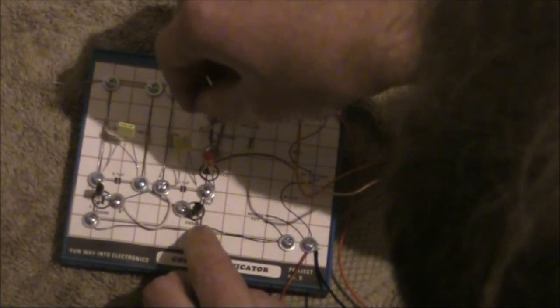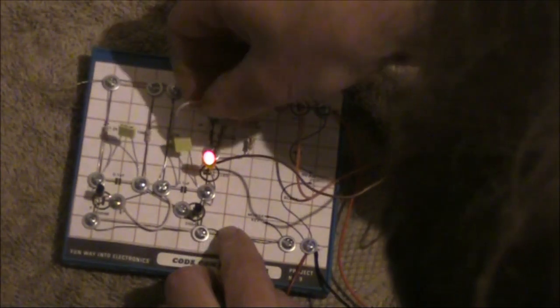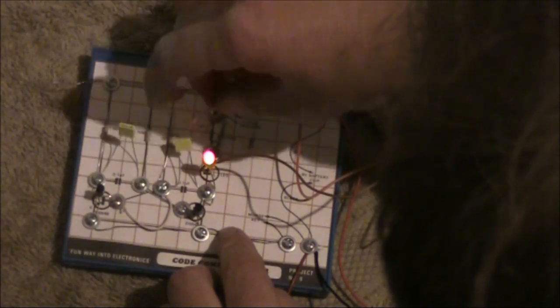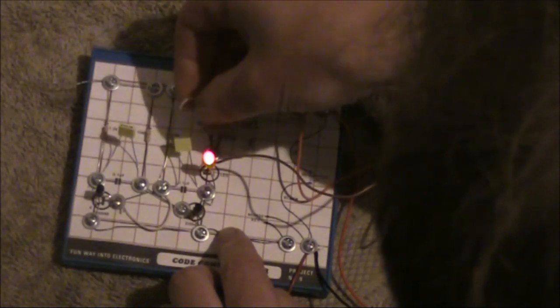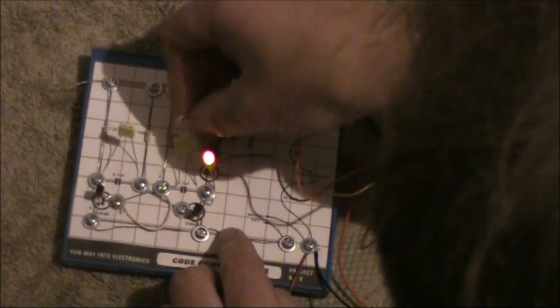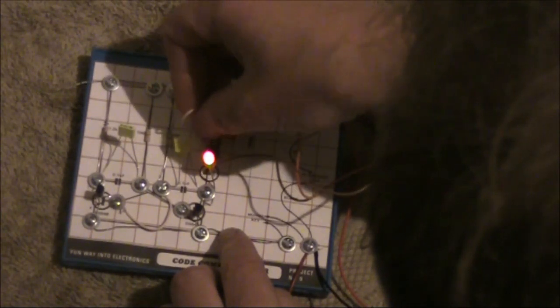So we'll just turn the oscillator on, and we'll bridge the 47 ohm resistor. Maybe it's slightly louder.